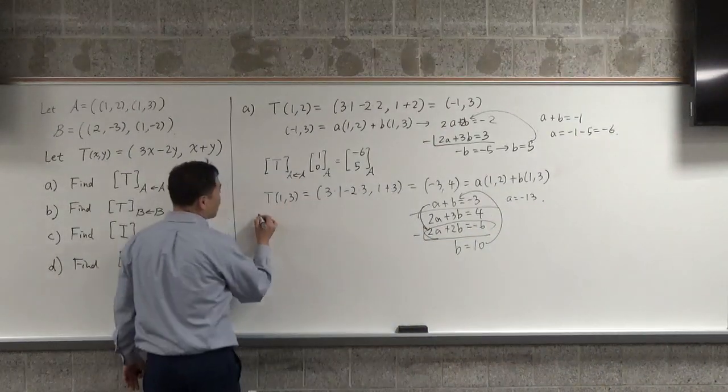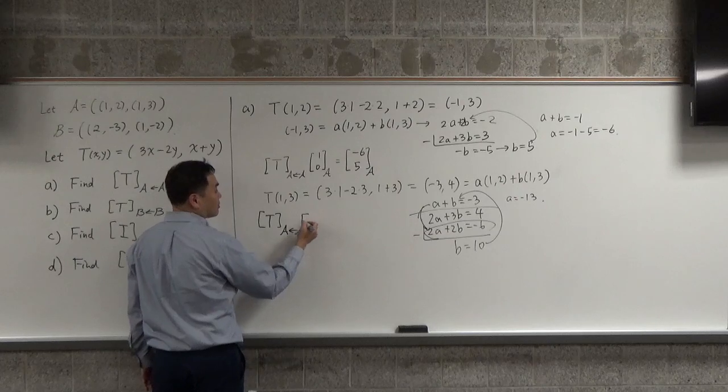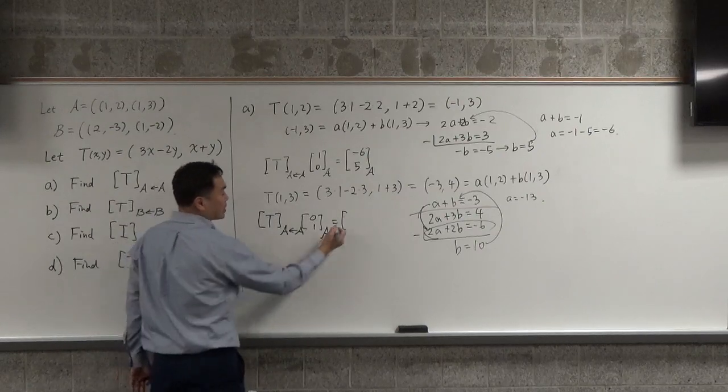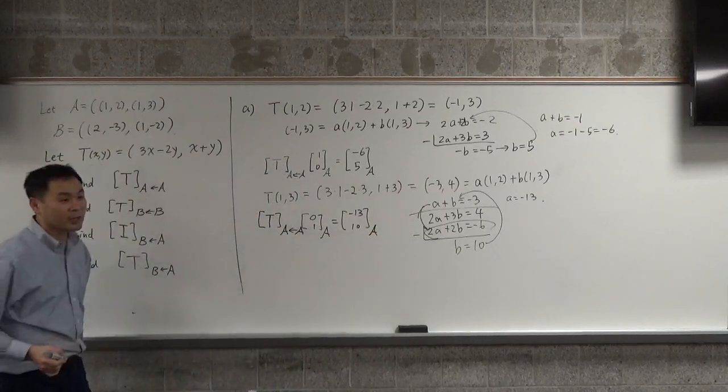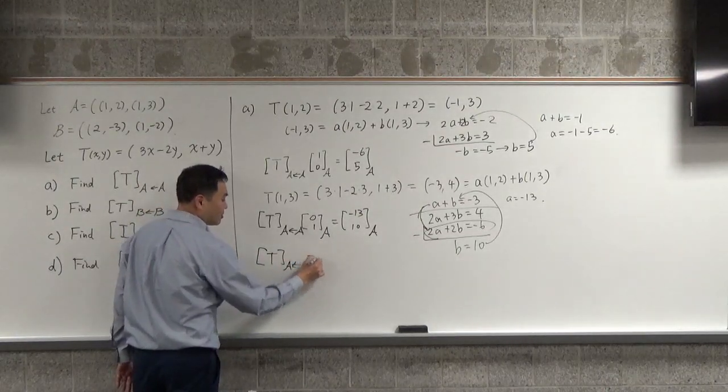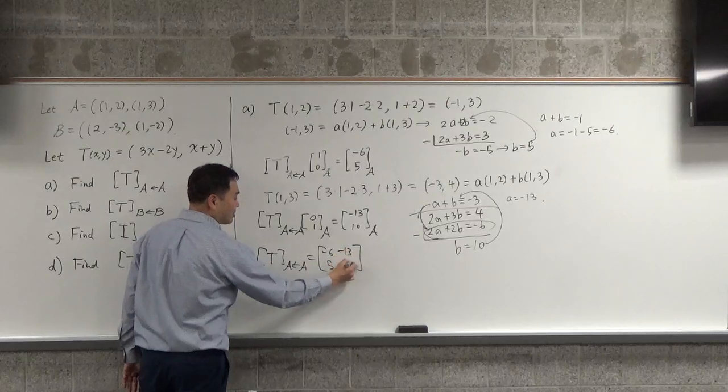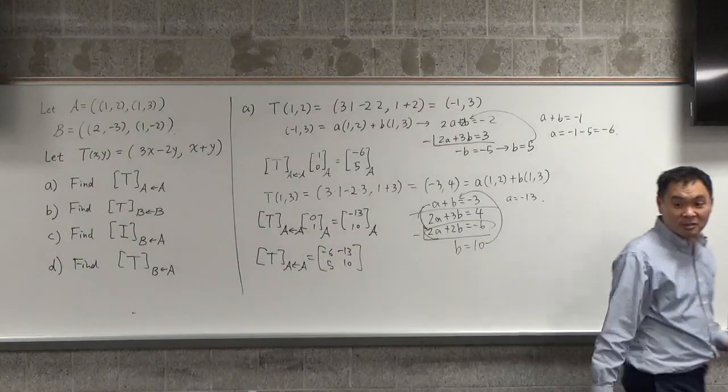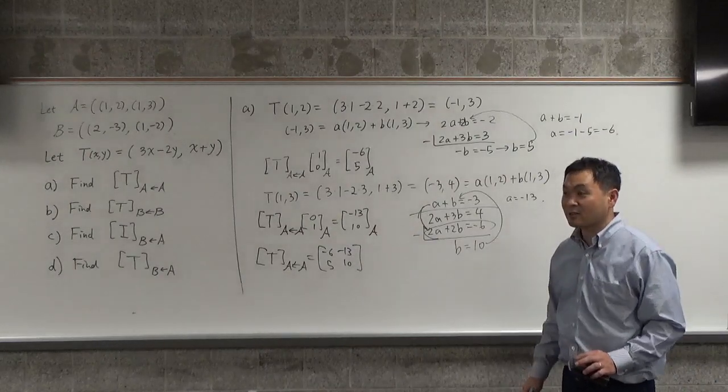So the result is that if I multiply T, A to A times (0,1)_A, it gives you negative 13 and 10, which is A. So now I figured out exactly what this matrix is. What is the matrix? First column is negative 6 and 5. Second column is negative 13 and 10. Done. That's what this is.